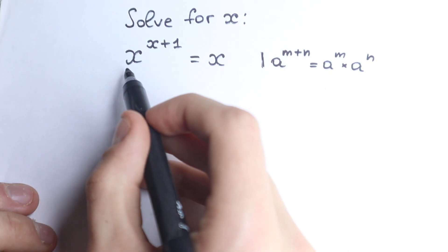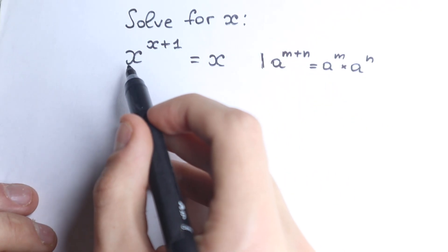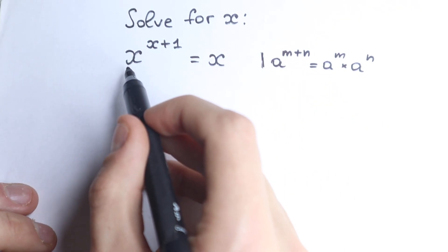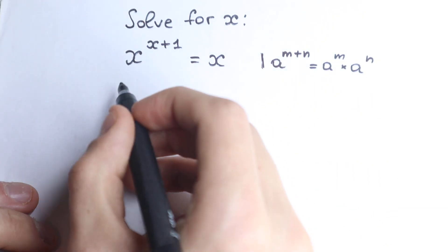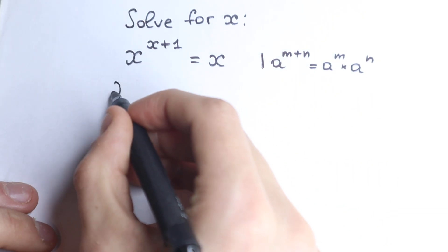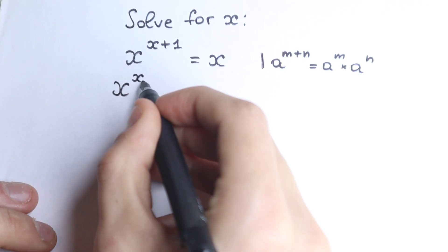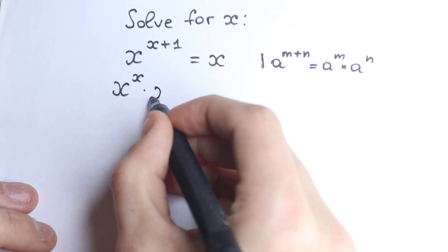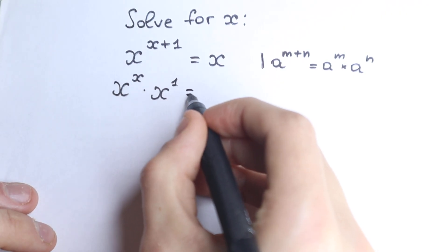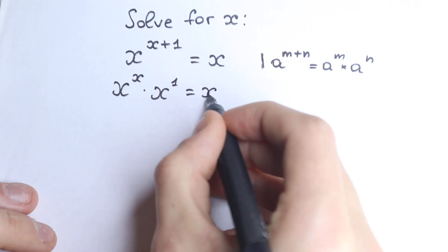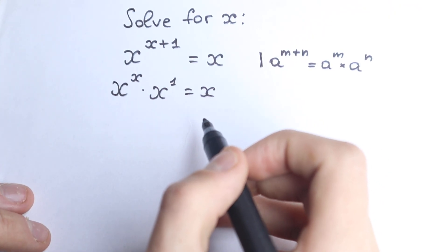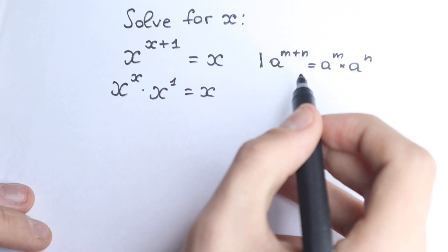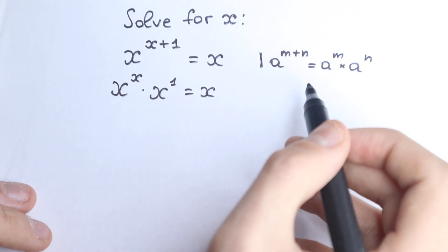We have absolutely the same situation right here with our x. We have x to the power x plus 1, so we apply this rule: x to the power x times x to the power 1 equals x. I hope you understand this step — we just apply this rule right here.